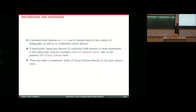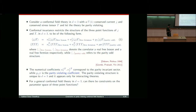An important feature in such conformal field theories is the fact that the relevant examples need not preserve parity. That is, there can be a Chern-Simons term in such theories, and there has been a systematic study of such theories in recent years. So let us consider a conformal field theory in D equals 3 with a conserved U(1) current J and conserved stress tensor T, and let the theory be parity-violating.